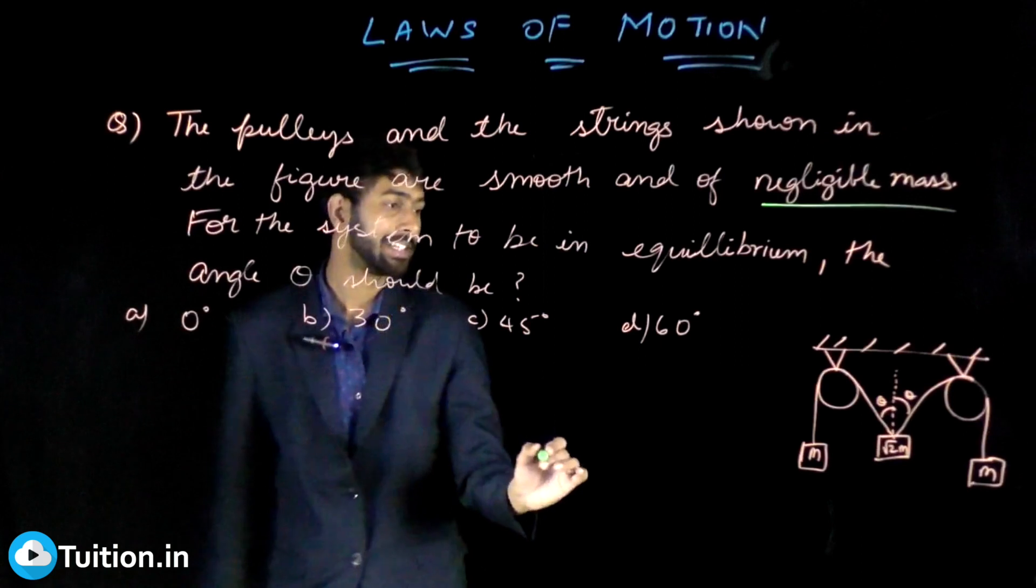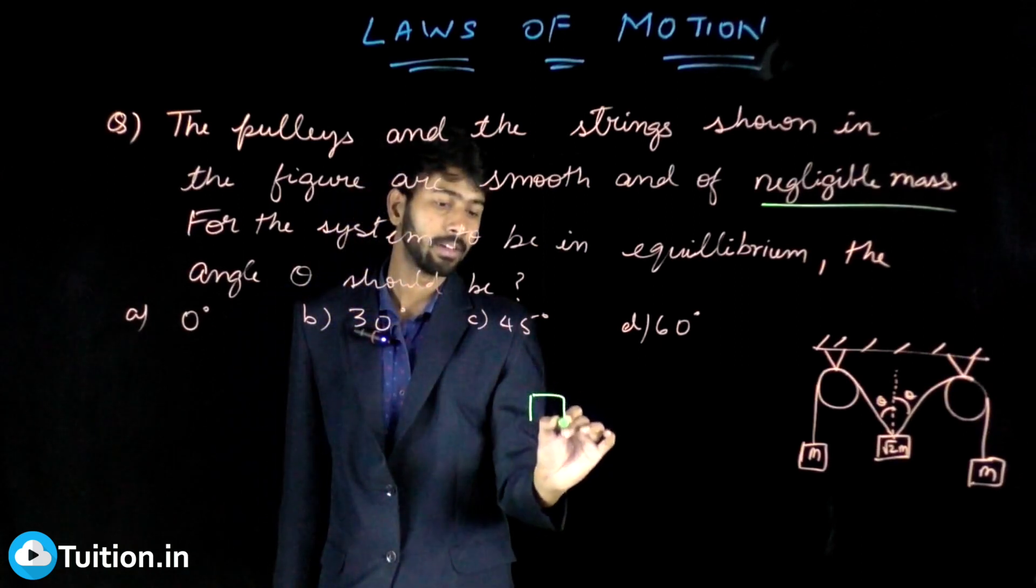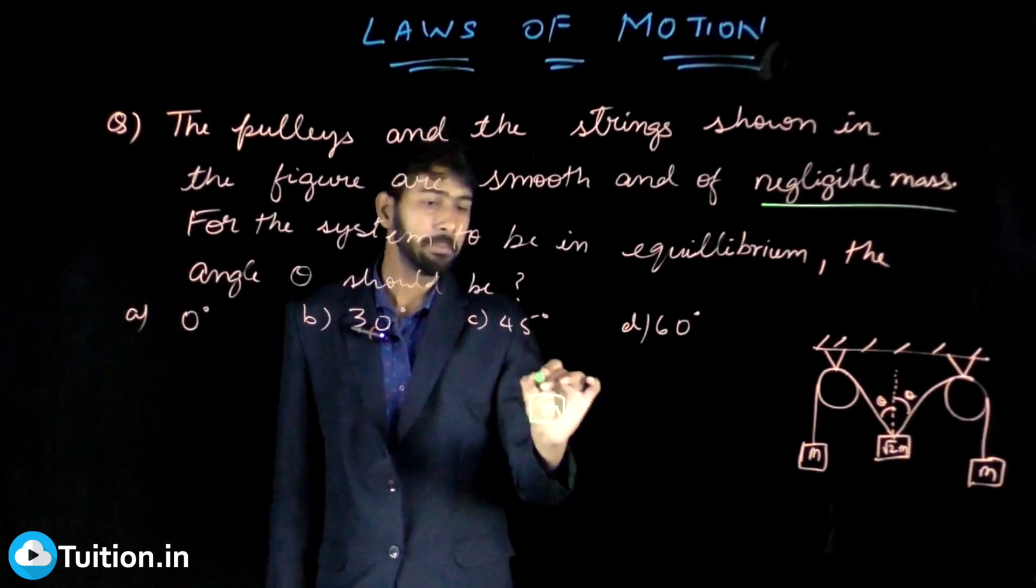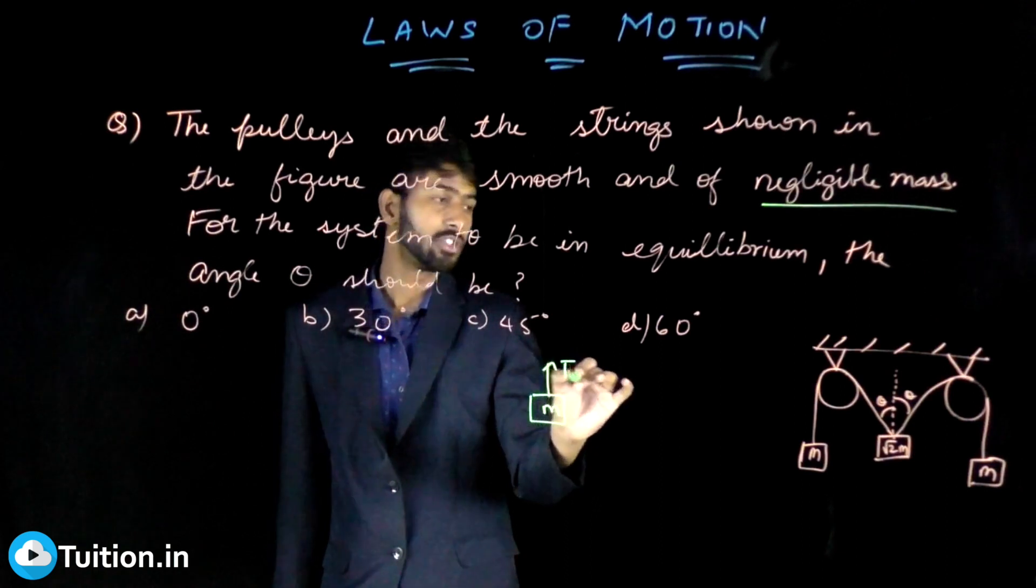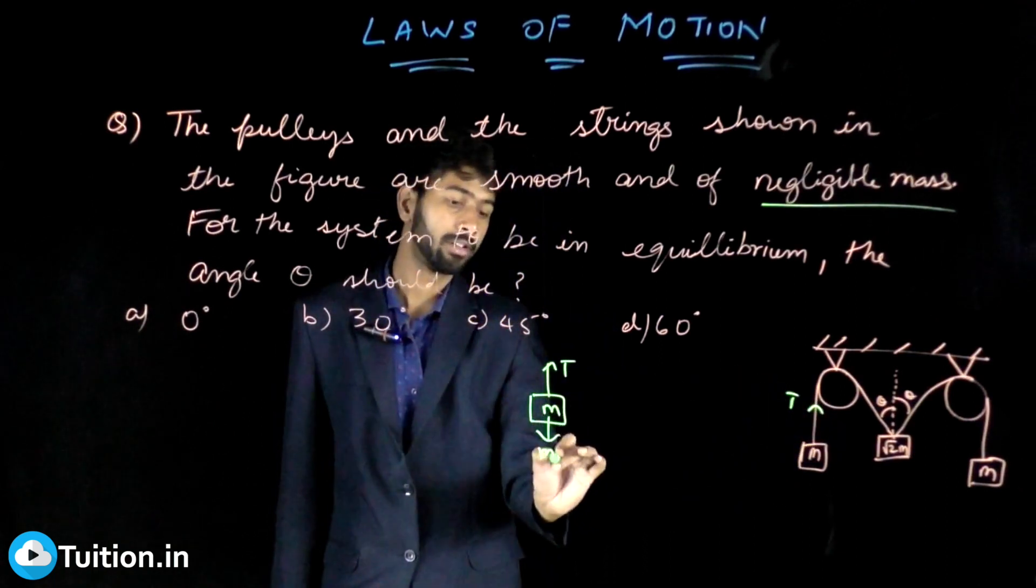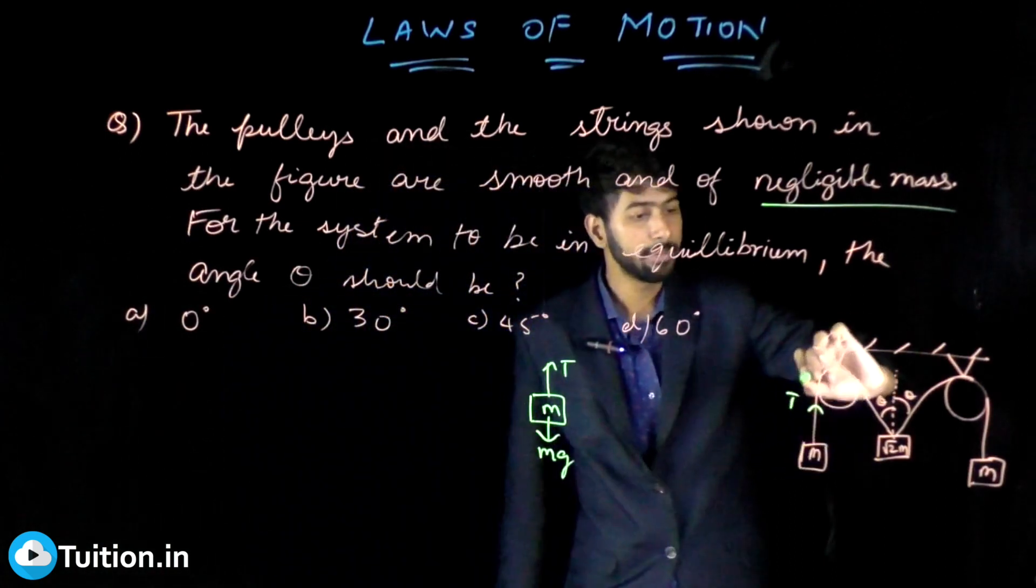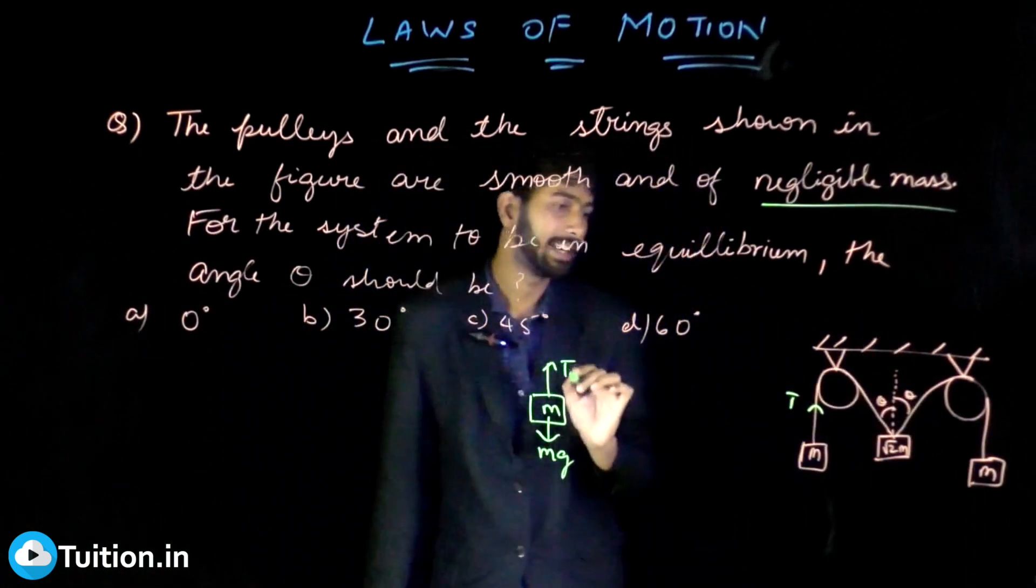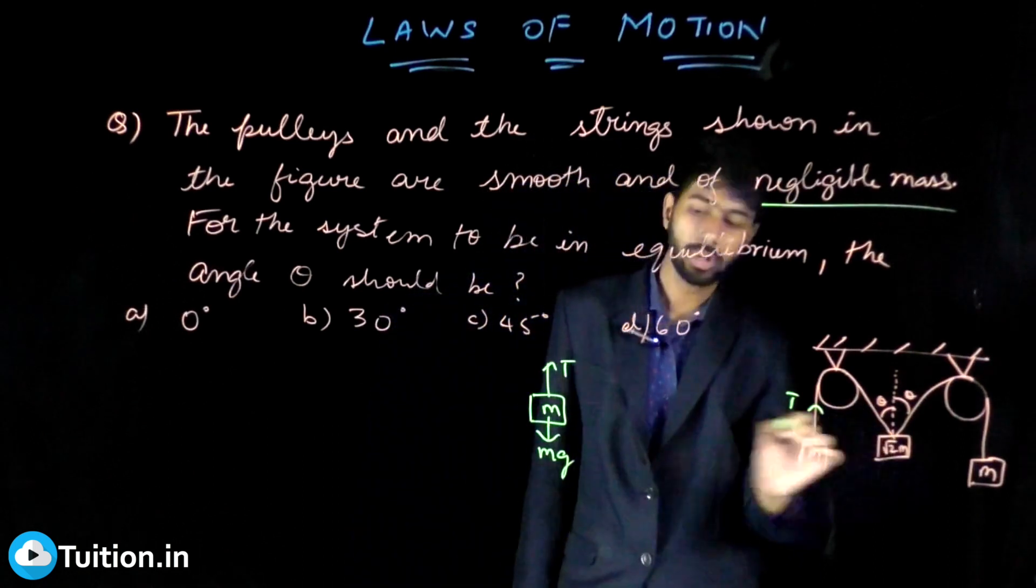The same string is passing through this, so the tension on this 2m also—the tension will be T on 2m also because the same string is passing.